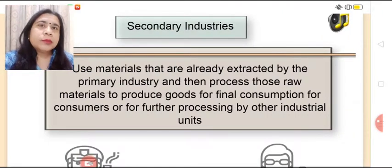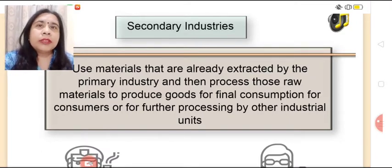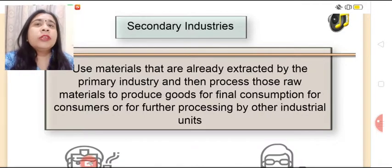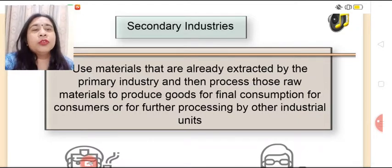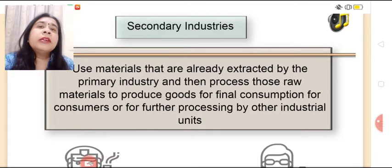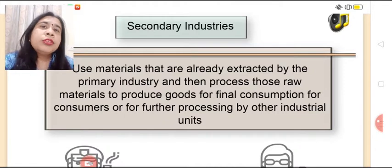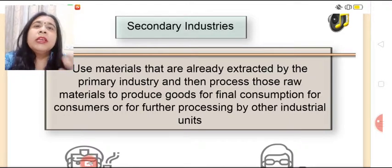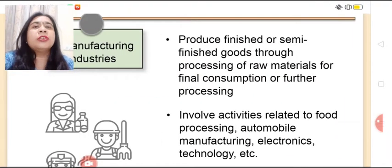I hope students that this small animation would have helped you to understand the secondary industries. Let us further elaborate. Secondary industries use the materials that are already extracted by the primary industry, and then process those raw materials to produce final or finished products for consumption by consumers or for further processing by other industrial units. These industries, which involve the use of machinery and use the primary product extracted from primary industries, are known as secondary industries. These industries are further categorized into two parts: manufacturing industries and construction industries.